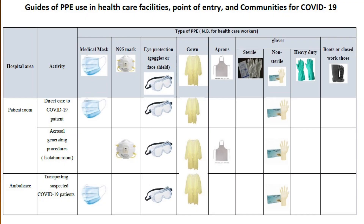This slide shows the types of PPEs that have to be used by healthcare workers in different areas. In the patient's room, as we know that COVID-19 is transmitted through droplet and contact, we need the surgical mask, goggles to prevent contamination of the conjunctiva, an isolation gown, and non-sterile gloves.